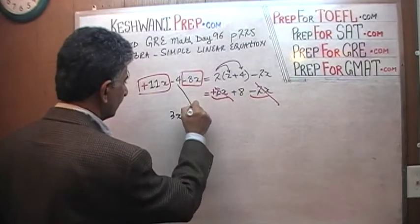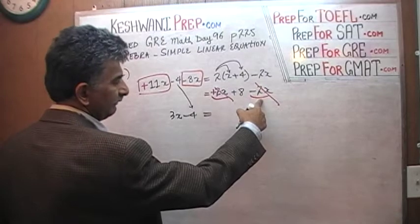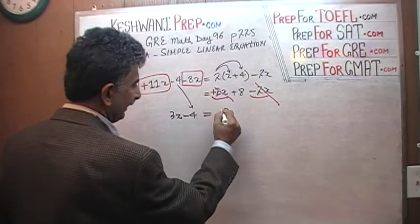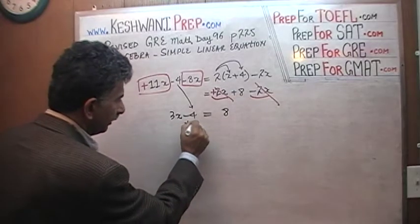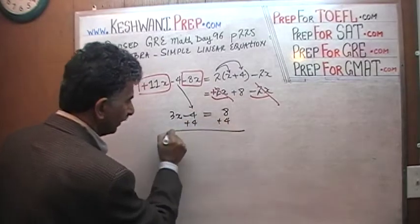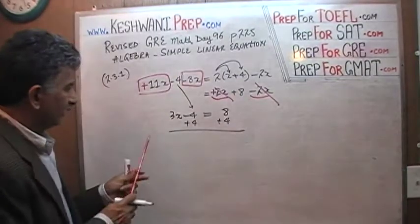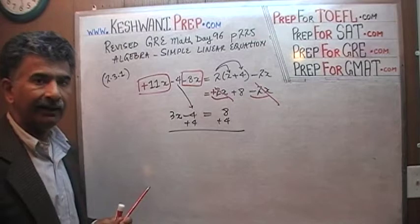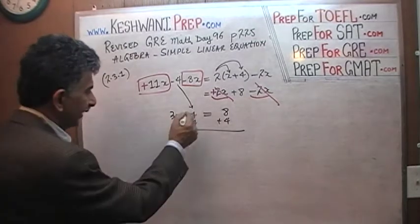This minus 4 comes down, equals. And on this side, this positive 2x is cancelled with this negative 2x and we are left with 8. Let's bring this negative 4 on this side. How do we do it? By adding 4 to both sides. That's how we speak. When somebody says let's bring this negative 4 to this side, what they are saying is that add positive 4 to both sides of the equation so that we can cancel this guy out.